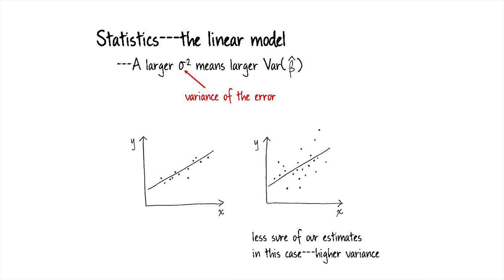So what's the first comparative static? What does that suggest about the mechanics of the regression? We have two identical data sets where the only difference is the error variance is greater in one. What does that mean? In this case, we're going to be less sure of our estimates. The variance of β̂ is greater. We'll have less confidence in our estimates. That makes sense, right? If we have very small error variances, we can estimate that linear relationship very precisely.